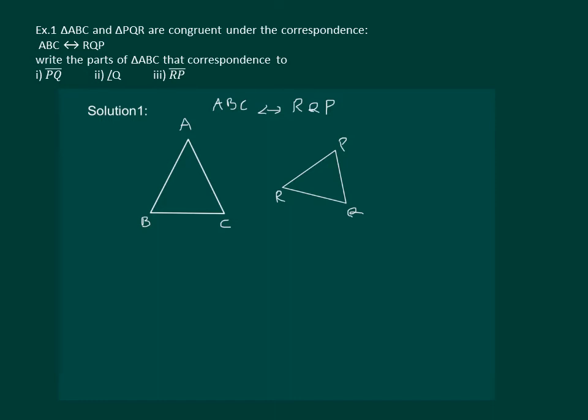For better understanding of the correspondence, let us use this diagram. Now the given correspondence means that A corresponds to R, B corresponds to Q, and C corresponds to P. And that would mean that R lies on A, B and Q lie together, and C and P lie together.